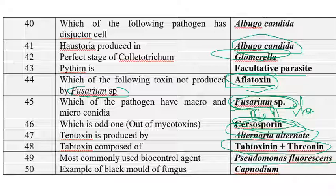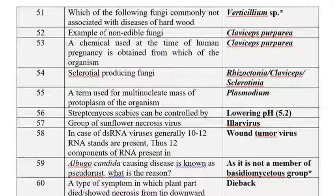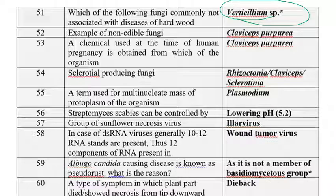The most commonly used biocontrol agent is Pseudomonas fluorescens. The example of a black mold fungus is Capnodium. Each of the following fungi is commonly not associated with the disease of hardwood — that is Verticillium species. Example of a non-edible fungus is Claviceps purpurea; if you eat it, you will die. A chemical used at the time of human pregnancy is obtained from Claviceps purpurea — the sclerotia can be used to restrict the overflow of blood during pregnancy.